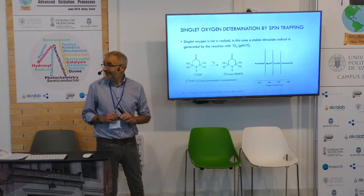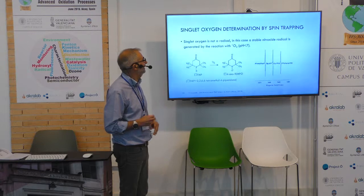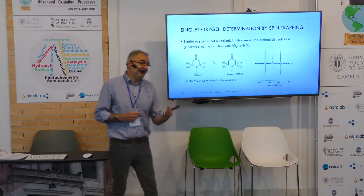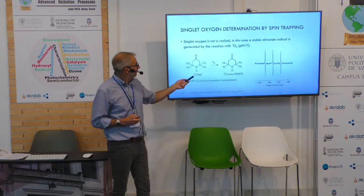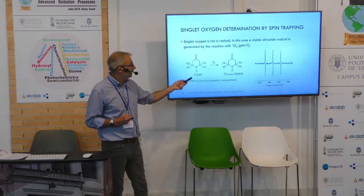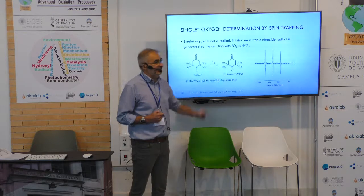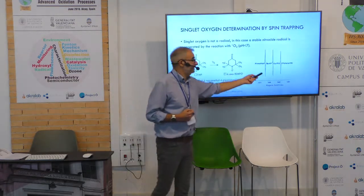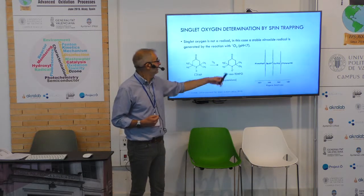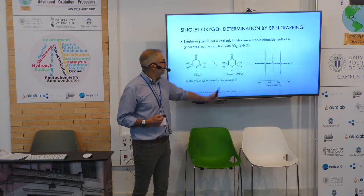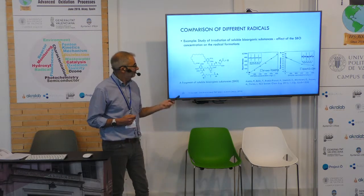One final example: in the case of a non-radical species like singlet oxygen, we can also use this kind of technique by using the right trapping methods. In the presence of a species like TMP, singlet oxygen generates a nitroxyl radical group, and we can observe a spectrum which is simply dependent on the coupling from the unpaired electron and the nitrogen atom, because in the nearby carbon atoms all hydrogens are substituted. This is only one example.